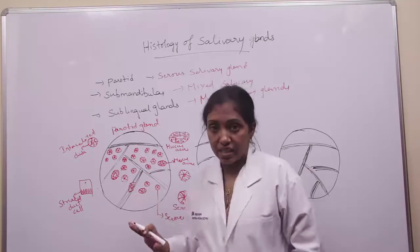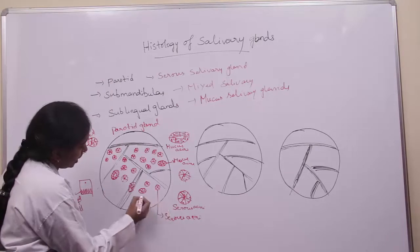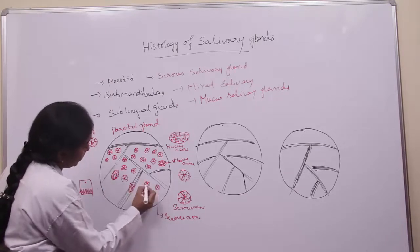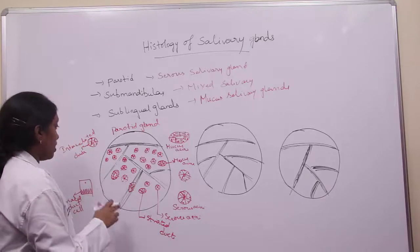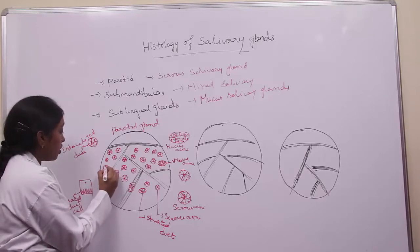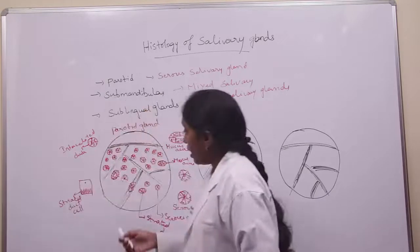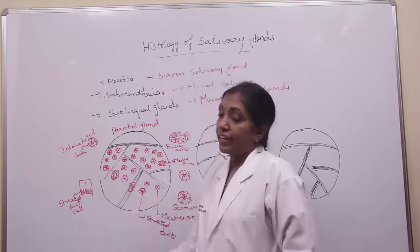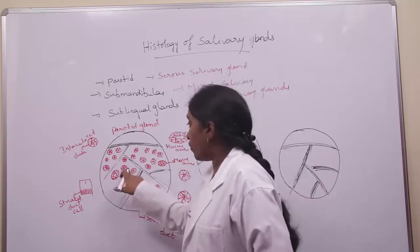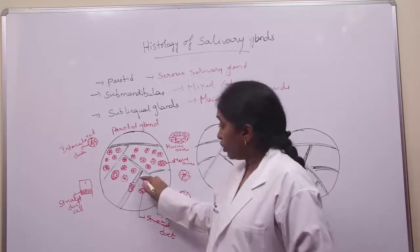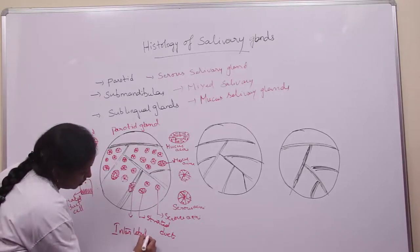In the lobe you will be able to see serous acini; along with the serous acini you will be able to see the striated ducts and also intercalated ducts. The intercalated ducts are lined by simple cuboidal epithelium. Striated ducts consist of cuboidal or columnar epithelium and the basal part of the cell shows striations. In the connective tissue you will be able to see the interlobular ducts, which are lined by columnar cells.